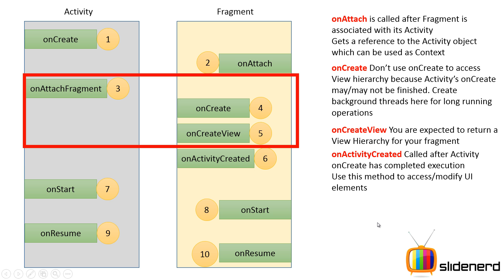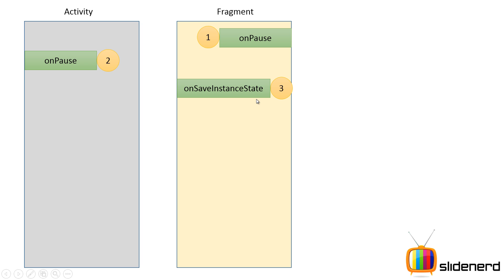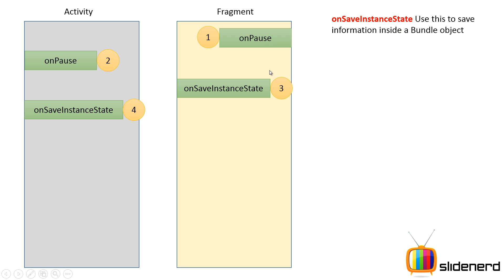Now let's talk about the methods called when a fragment is about to be destroyed — for example when the user is exiting the application. First, on pause is called in the fragment, then on pause in the activity. Then on save instance state is called in the fragment first, followed by on save instance state in the activity. On save instance state gives you a bundle object in which you can store values to use later when you return to the fragment. Then on stop is called in the fragment, followed by on stop in the activity.